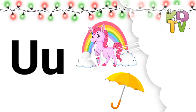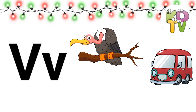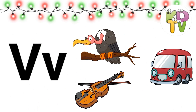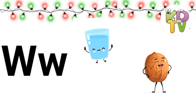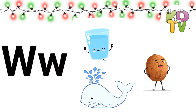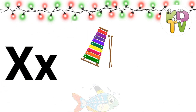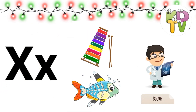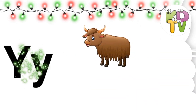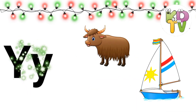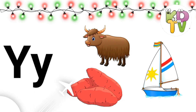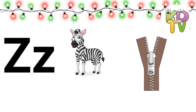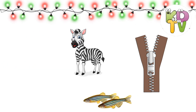V is for Vulture. W is for Water, Walnut, Whale. X is for X-ray. Y is for Yacht, Yam. Z is for Zebra, Zip, Zebrafish.